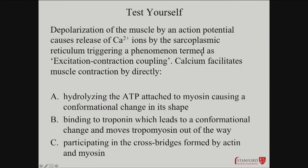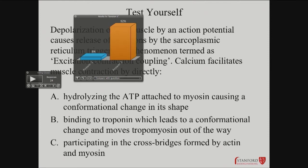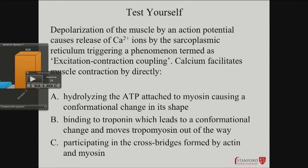Let's do a little test on this. Depolarization of the muscle by an action potential causes release of calcium ions by the SR, triggering a phenomenon termed excitation-contraction coupling. Which of the following best describes how calcium facilitates muscle contraction: hydrolyzing ATP attached to myosin; binding troponin, which leads to a conformational change and moves tropomyosin out of the way; or participating in cross-bridges formed by actin and myosin? The correct answer is binding troponin — it moves that tropomyosin out of the way and allows the contraction to happen.